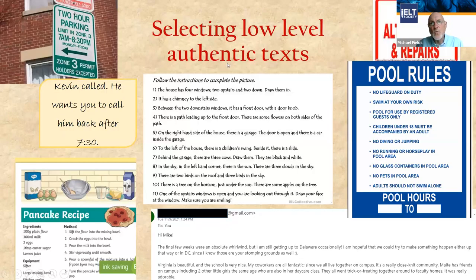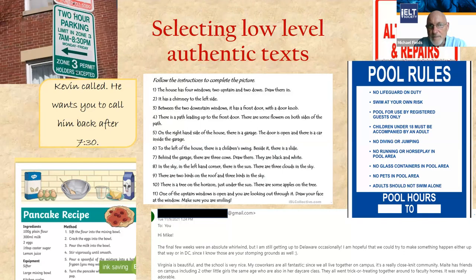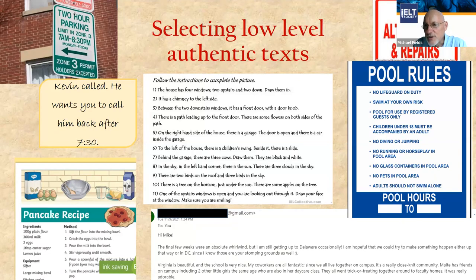You might ask: what if I have low-level learners — how can I use authentic texts? But there are lots of examples of authentic texts at the lower level: street signs, shop signs, notes, recipes, emails, pool regulations. All of these are from authentic sources, yet we could use them at a lower level.